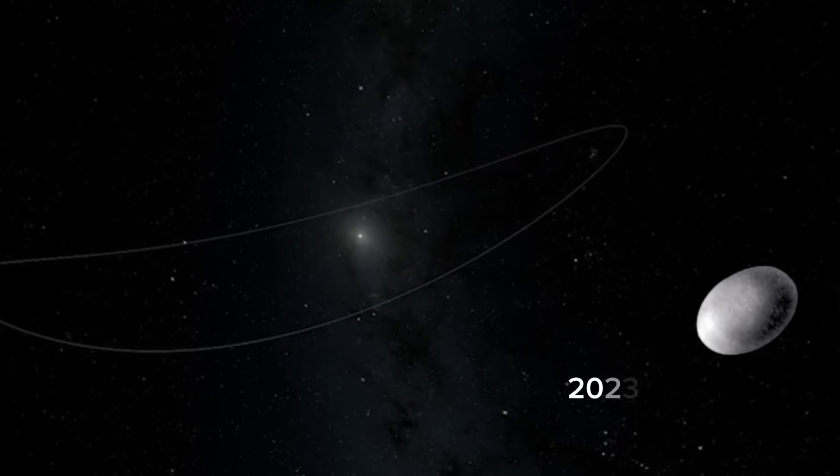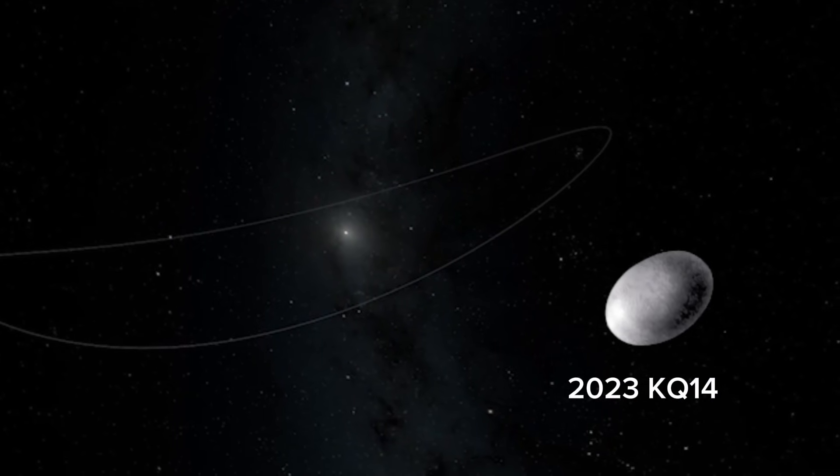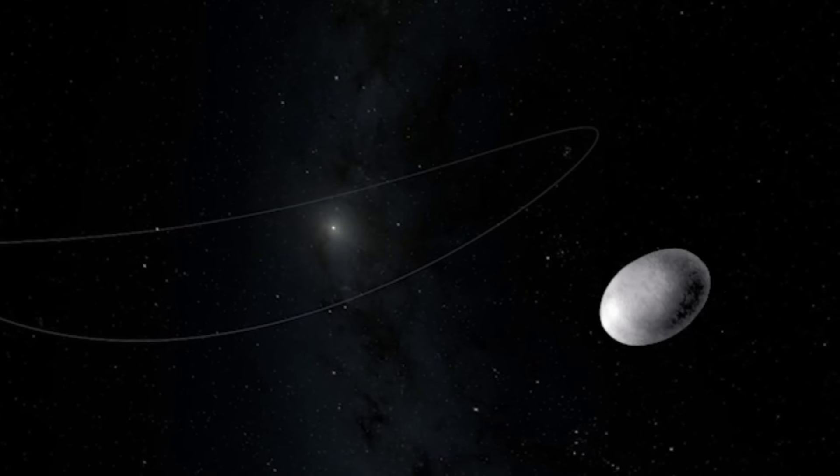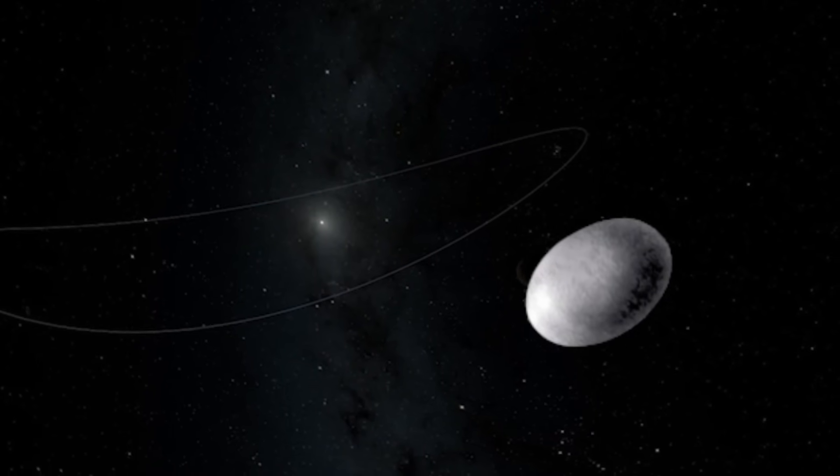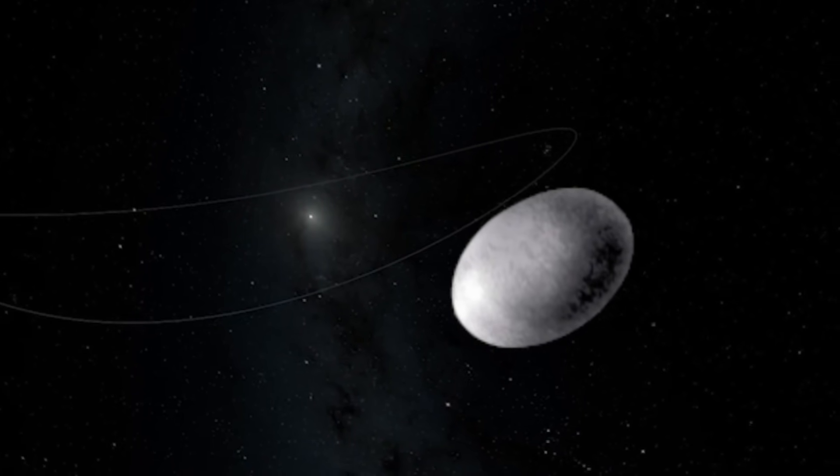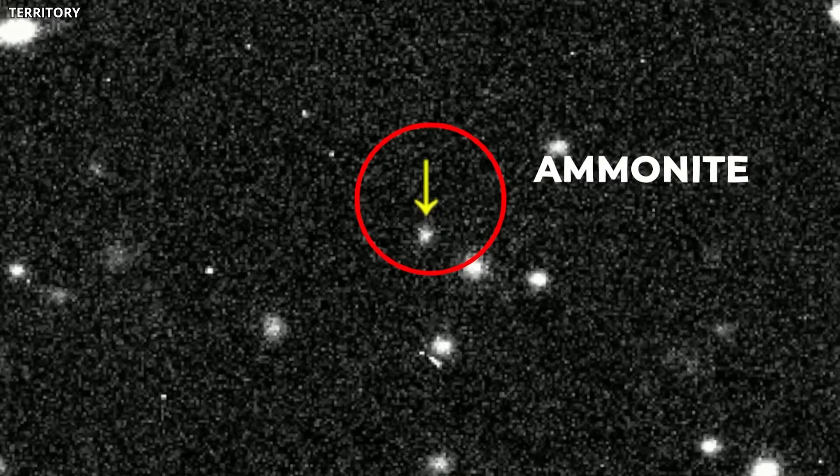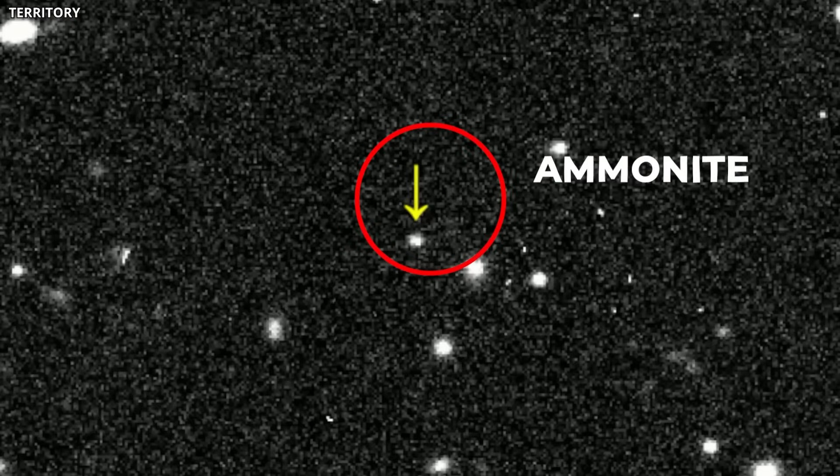Then there's the other newcomer, 2023 KQ14, nicknamed Ammonite. This fourth known Sednoid or Sedna-like object was found using the Subaru telescope and confirmed via archival data and follow-up observations.